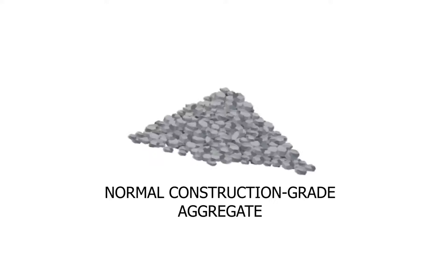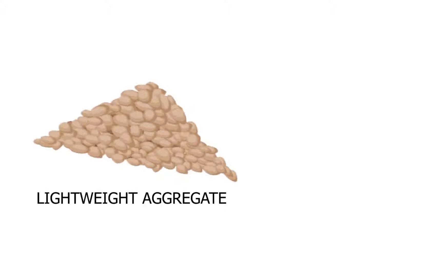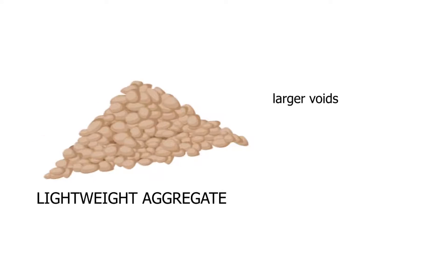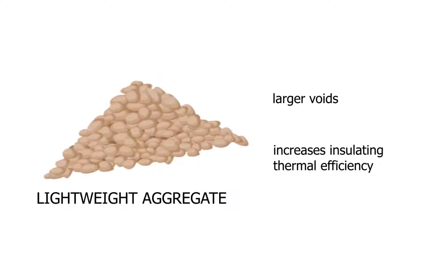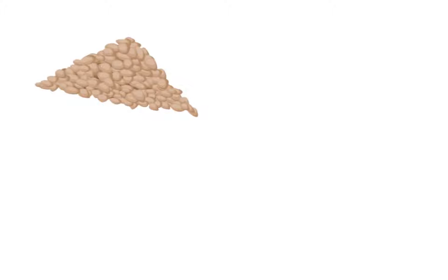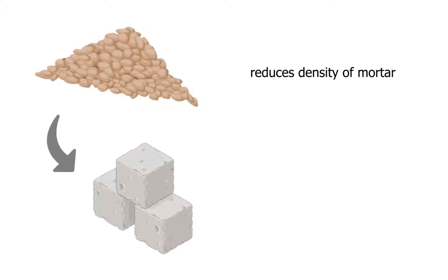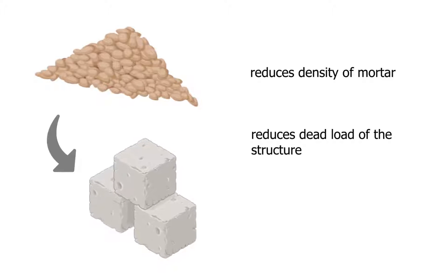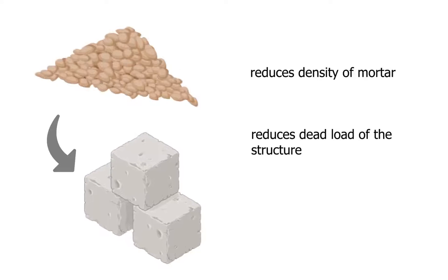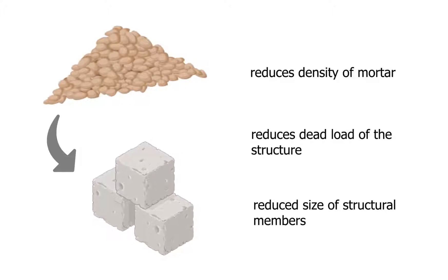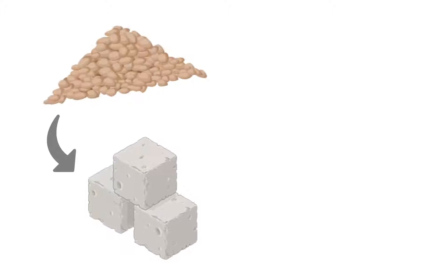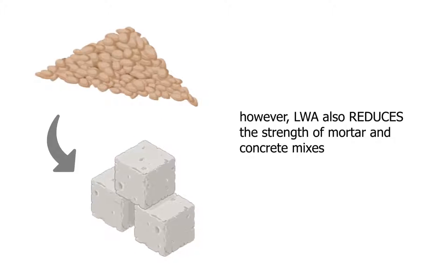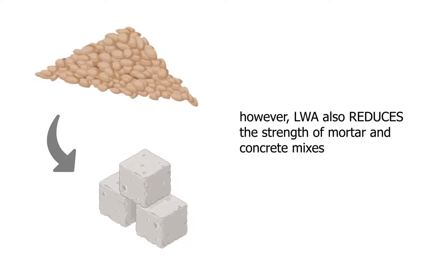Unlike normal virgin aggregates, lightweight aggregates contain a larger volume of voids. This increases the thermal insulating efficiency of lightweight mortar compared to that of normal mortar. Lightweight aggregates also reduce the density of mortar, which could reduce the dead load of the structure, potentially leading to smaller structural members.